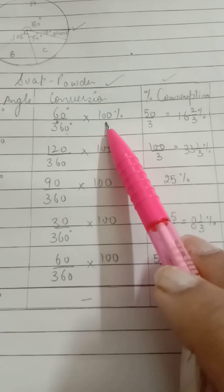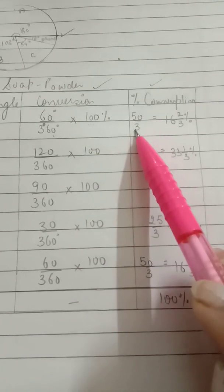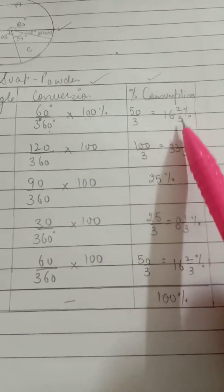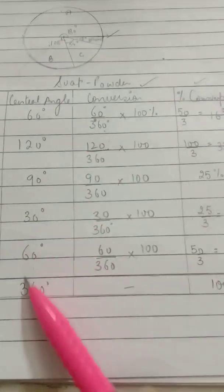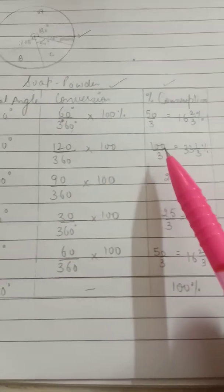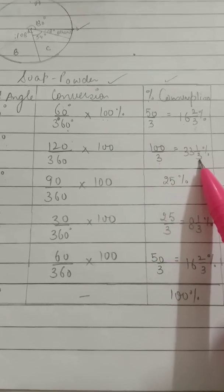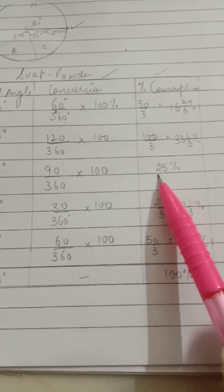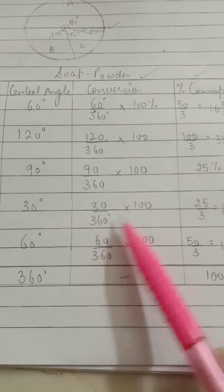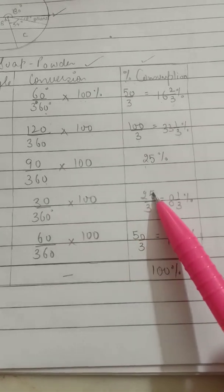First, 60 degrees: the total of the degree is 360 degrees. To convert it into percentage, the total of the percentage is 100, so we'll multiply it with 100 percent. It comes as 50 upon 3, mixed it's 16⅔ percent. Number two: 120 degrees upon 360 degrees multiply by 100, it comes as 100 upon 3, mixed fraction 33⅓ percent.